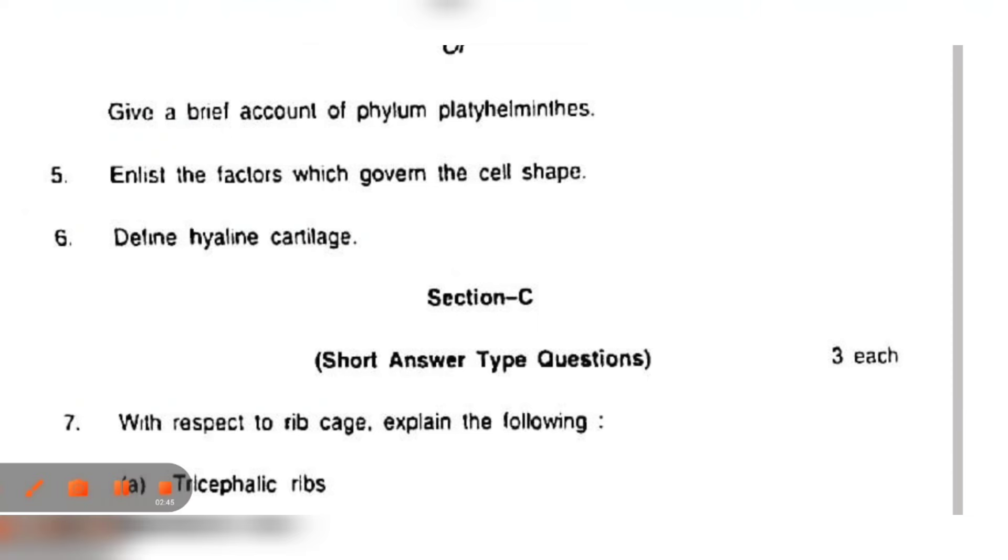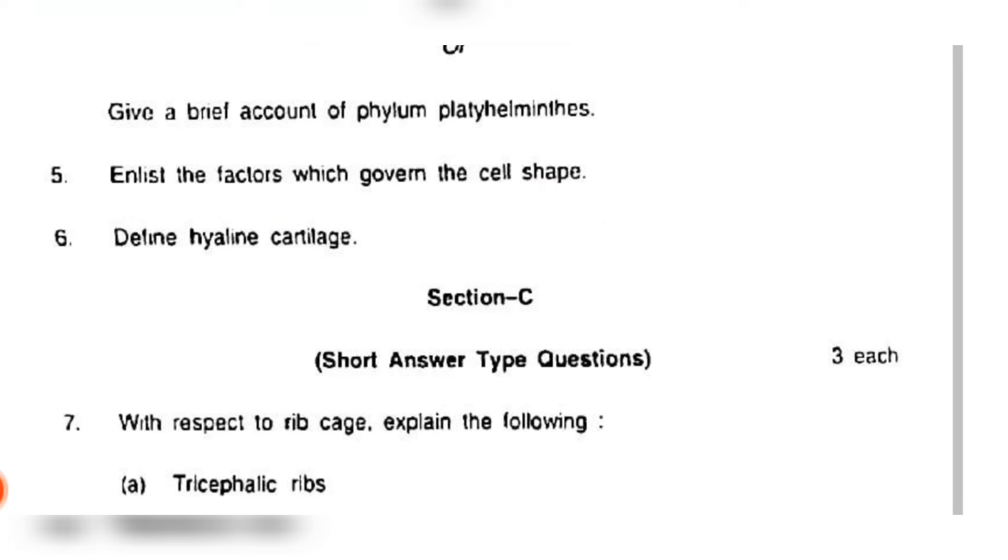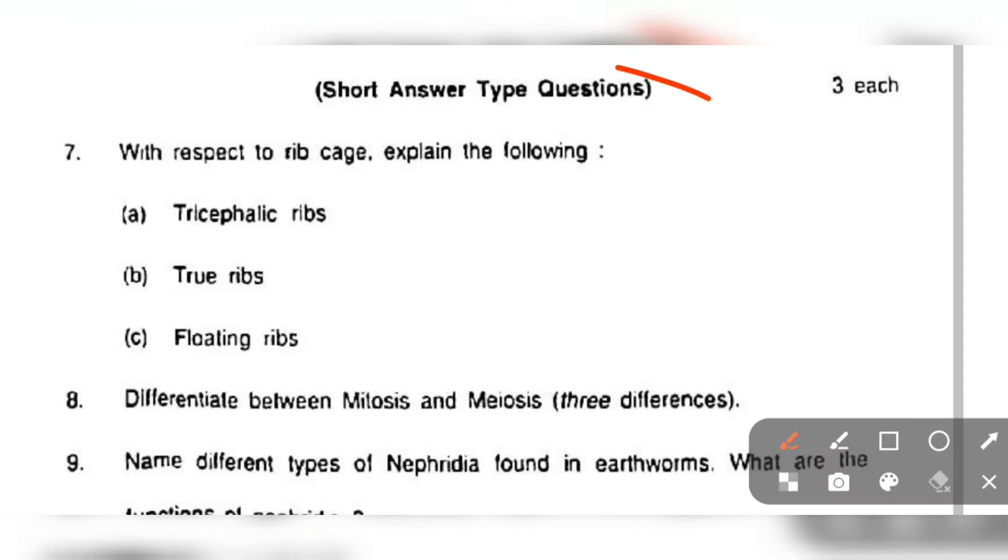Now define hyaline cartilage. What is this? This is connective tissue, mostly present in the trachea and nose. It produces resistant surface with minimum friction. So you can write the actual question. Then we have the short type answers from Section C. Here each question is 3 marks.